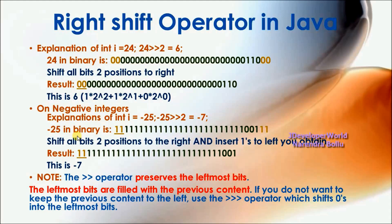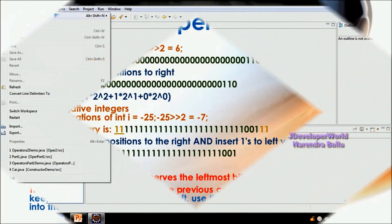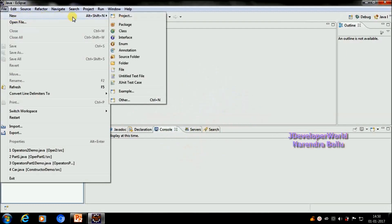If you do not want to keep the previous content to the left, use the unsigned right shift operator, which shifts zeros into the leftmost bits. We will see how the right shift operator is used in Java in a new project.